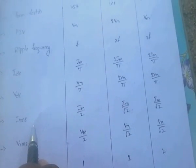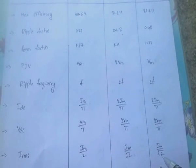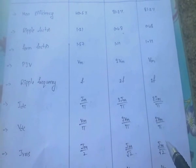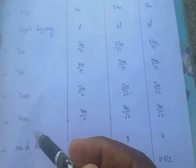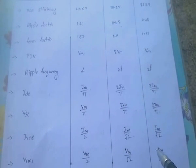IRMS and VRMS values are very important. For half wave rectifier, IRMS equals I_M by 2. For center tap and bridge rectifier, IRMS equals I_M by root 2. VRMS equals V_M by 2 for half wave rectifier. For center tap and bridge rectifier, VRMS equals V_M by root 2.